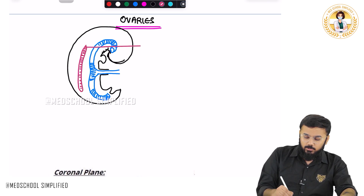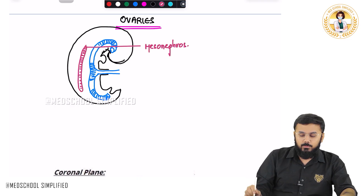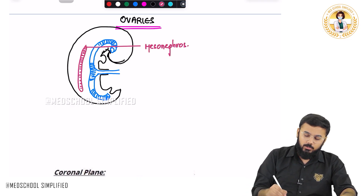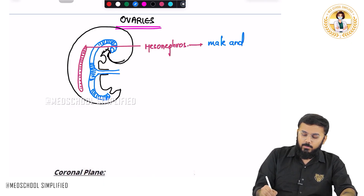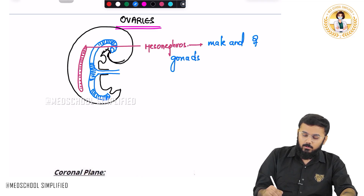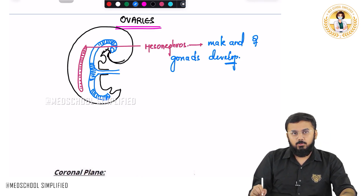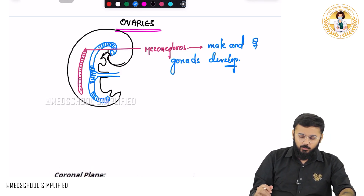This structure is called as mesonephros. So from the mesonephros only, you will have the male and female gonads development. So the male and female gonads develop from the mesonephros. So if you look at the ovary, where is the ovary exactly present?